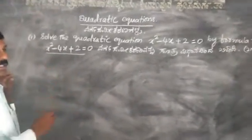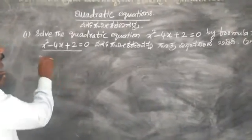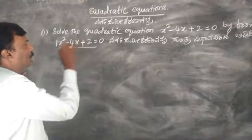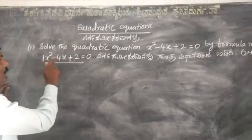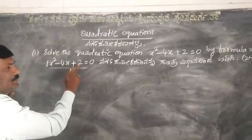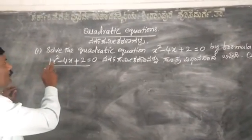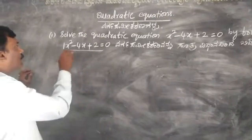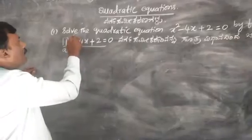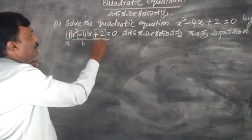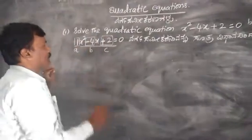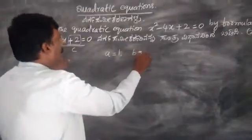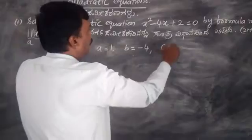We will identify the coefficients. This is a, this is b, and this is c. First we write the coefficients: a is equal to 1, b is equal to minus 4, and c is equal to 2.